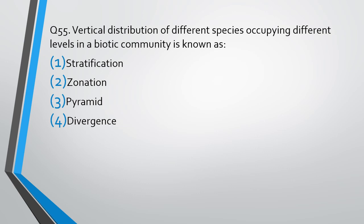Question number 55. Vertical distribution of different species occupying different levels in biotech community is known as stratification, zonation, pyramid, divergence. Vertical distribution. The correct answer is Option 1, stratification.